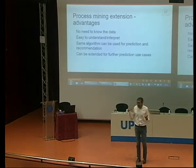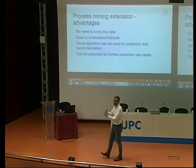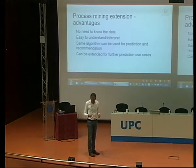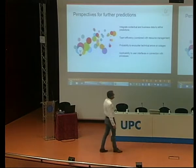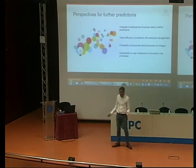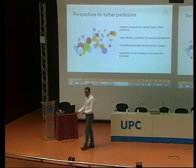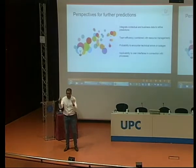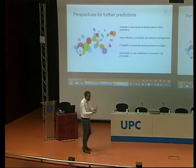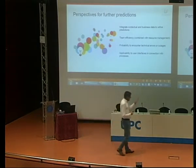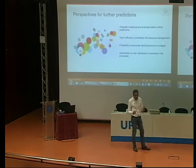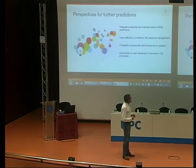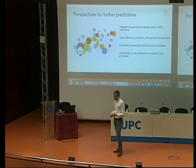The great thing is you can recommend by using the prediction algorithm and running a simulation on it, because you know exactly what can happen afterwards. And it can be extended to different other use cases — for example, integrating contextual or business data. Going back to the loan application, if you have business loan data available, you can create correlations and enrich your model. You can also work on better team efficiency management, because the majority of inefficiencies are related to the people involved in the process.